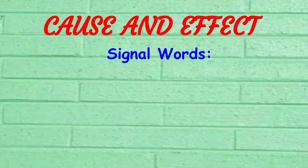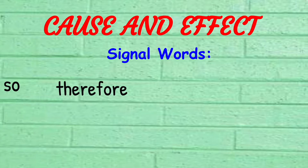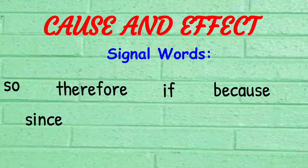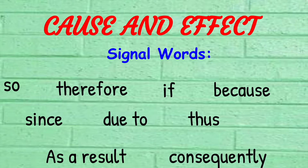One way to spot cause and effect relationships in the text is to look out for signal words. Cause and effect signal words tell the readers that there might be cause and effect occurring. Some examples of signal words for cause and effect are: so, therefore, if, because, since, due to, thus, as a result, and consequently.